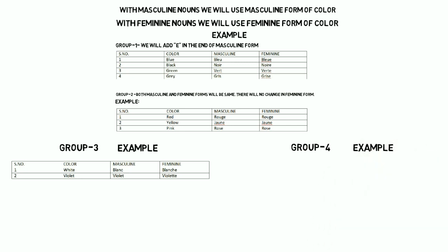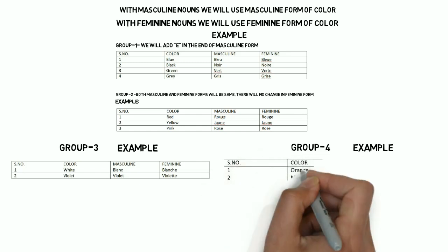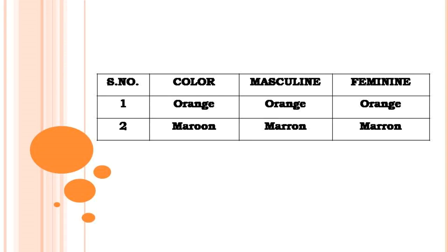Now there is a fourth category of colors which do not change in spelling when converted to feminine. For example, orange — orange in masculine and feminine will remain the same. And in the same category, we have another color which is maroon, which in French is marron, and it will remain the same in both masculine and feminine form.